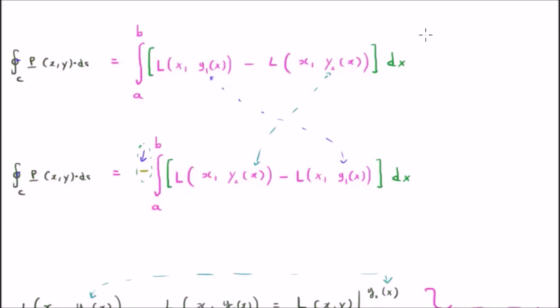So, what I've done here on the top of your screen is I've rewritten both of those integrals together. They have the common integral sign, and the common variable dx, and I've written them here as their difference: L a function of x and y1 minus L a function of x and y2.